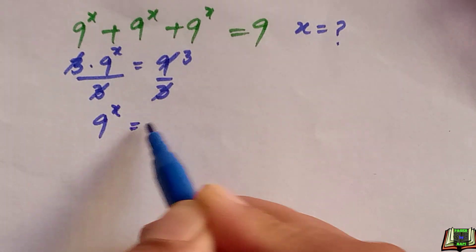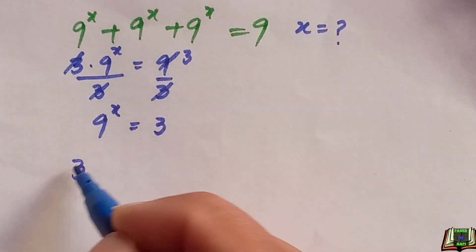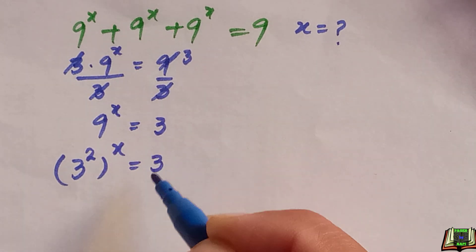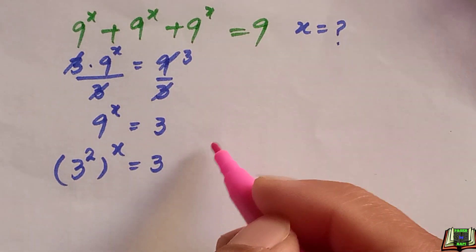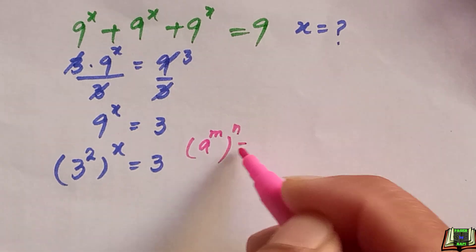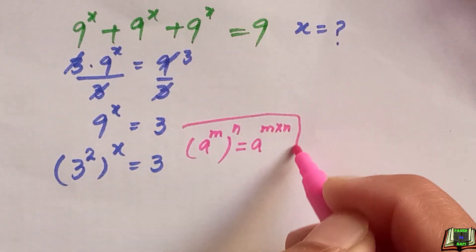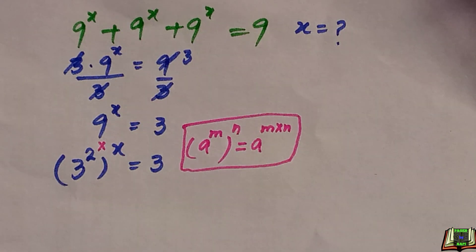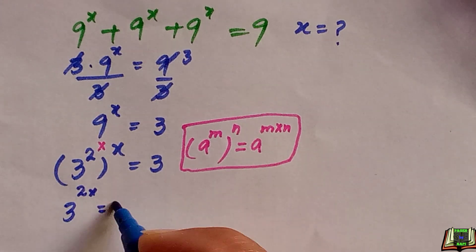We have 9 raised to power x is equal to 3. We can write 9 as 3 raised to power 2, whole power x, equal to 3. When a number has a power raised to another power, we use the power of a power rule: a raised to power m, raised to power n, equals a raised to power m times n. So this gives us 3 raised to power 2x is equal to 3.